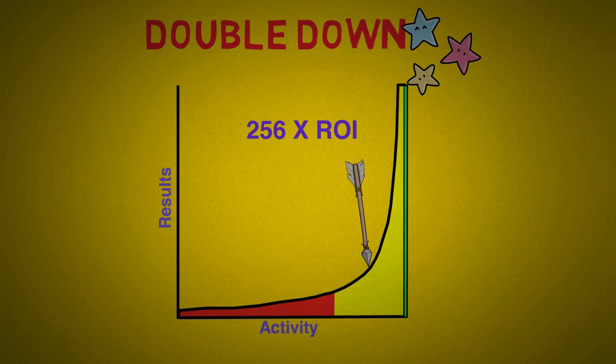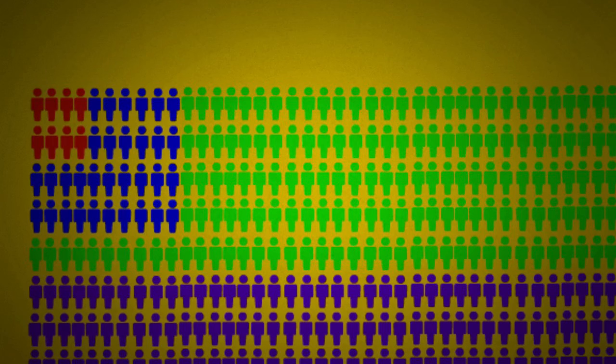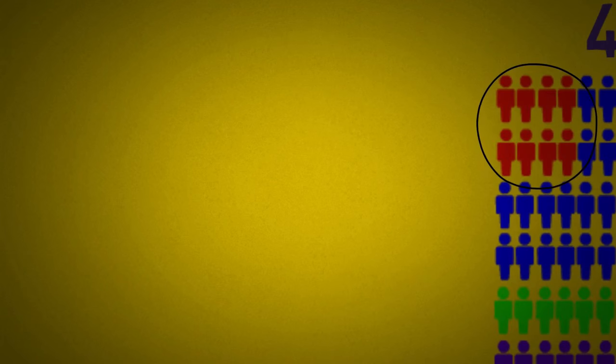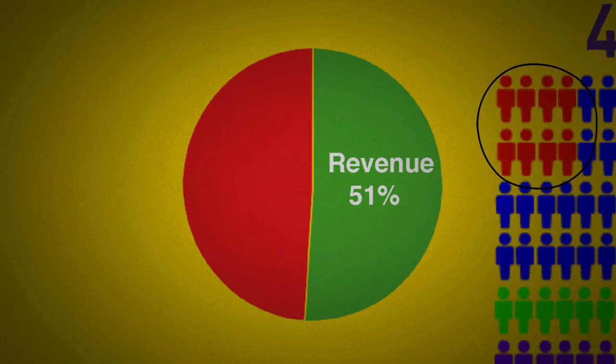Then if that's not enough, double down again and start getting an insane 4,096x ROI. Like if you had 1,000 employees, focus your attention on the 8 who are going to give you a 4,096 to 1 return. They'll be generating about 51% of your revenue.